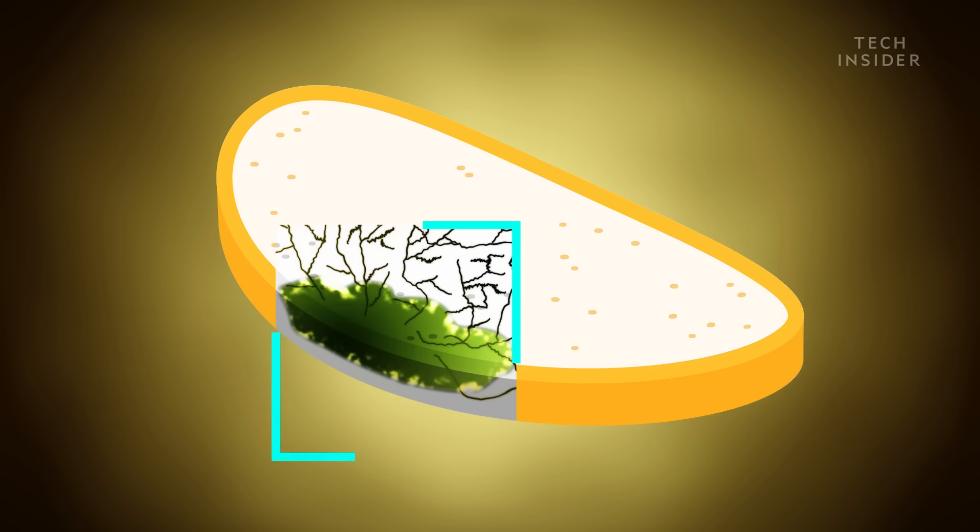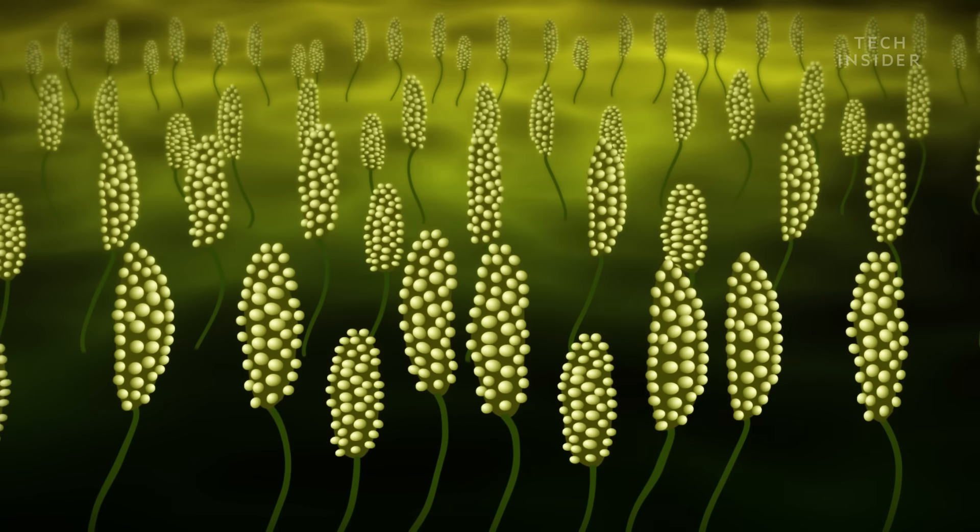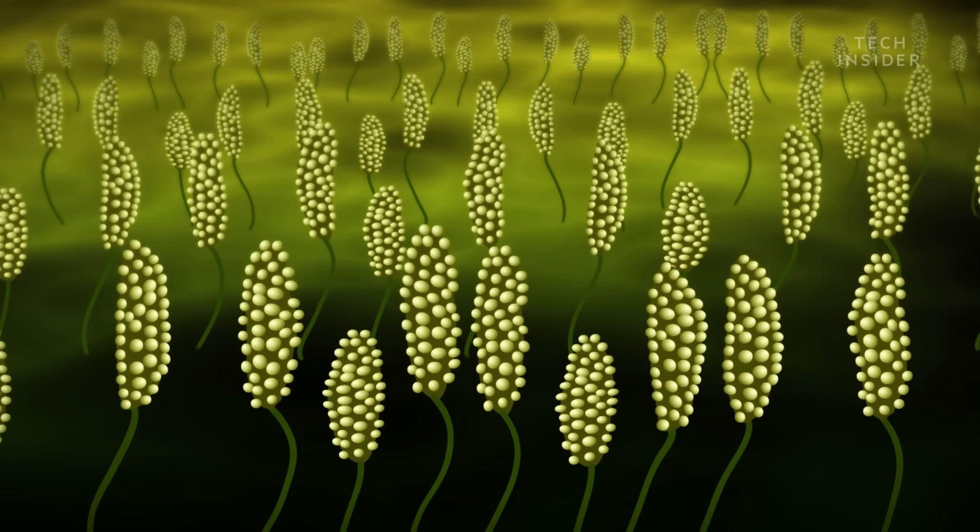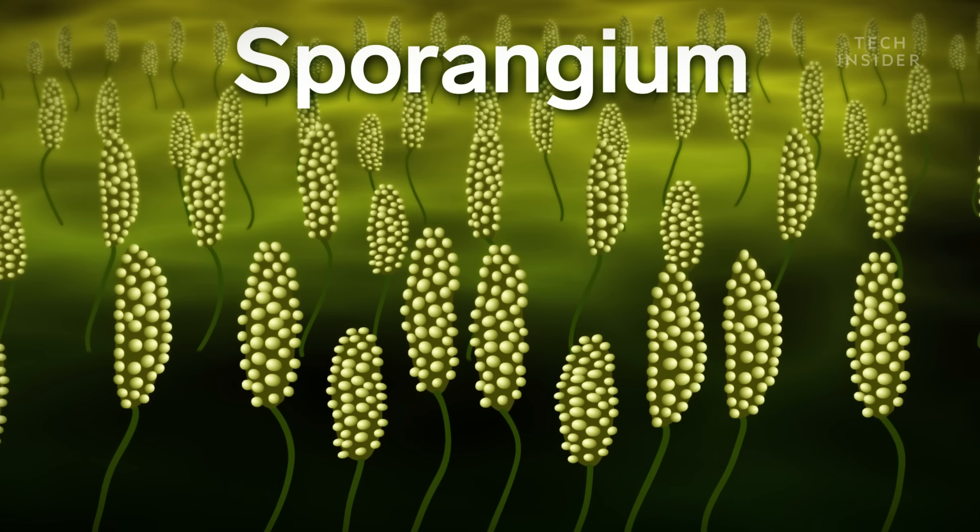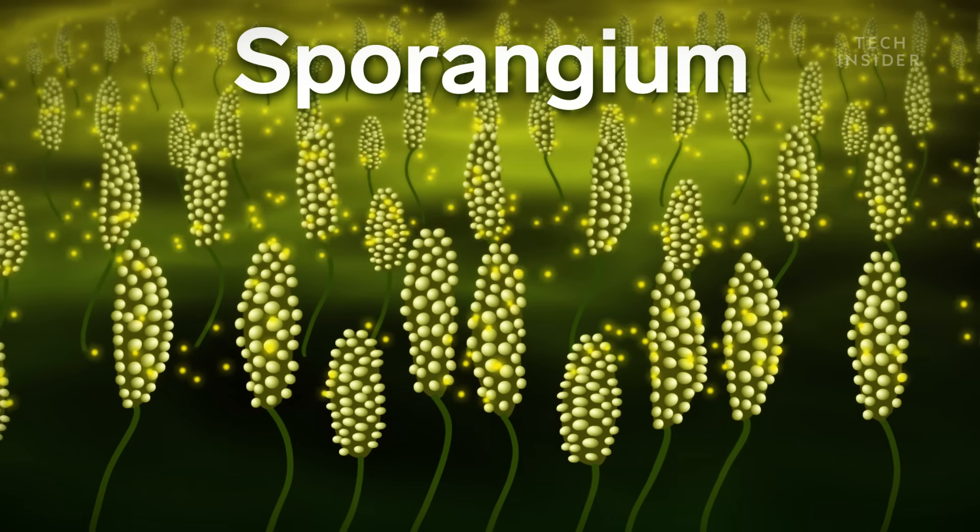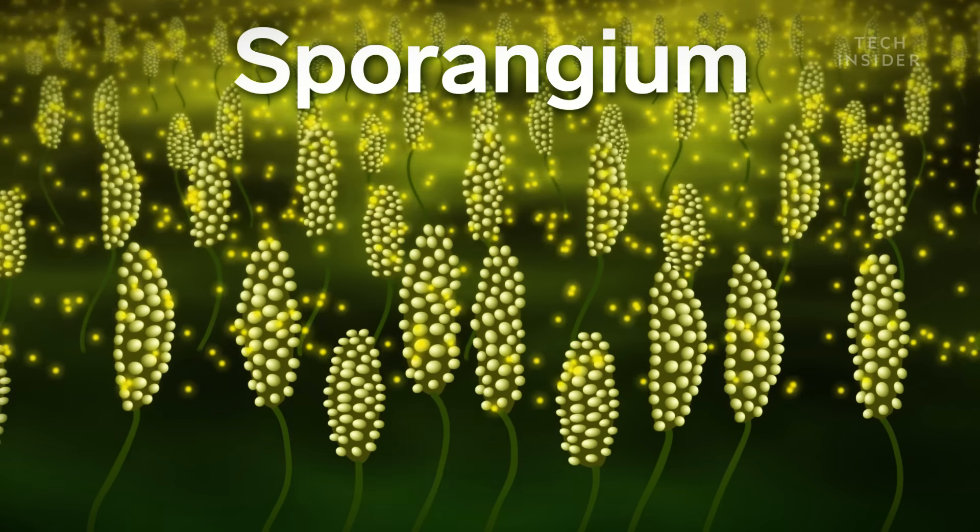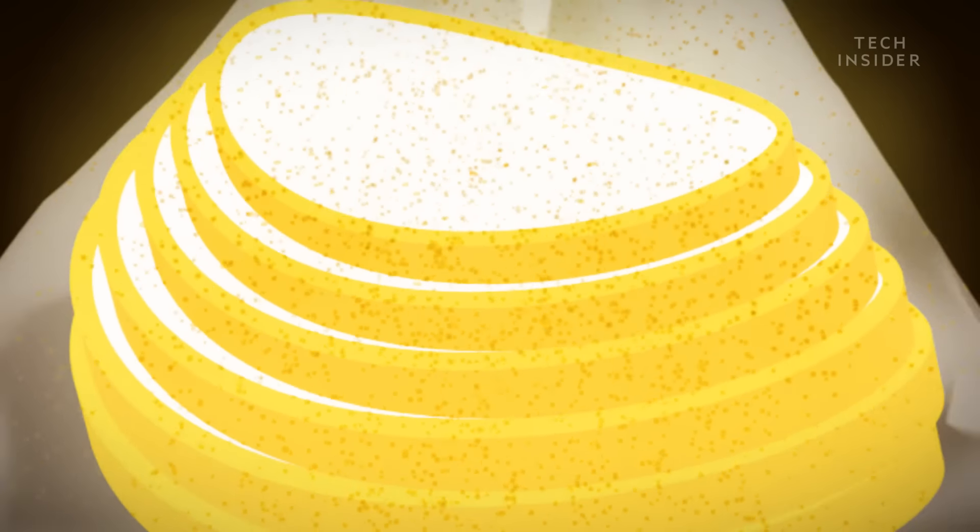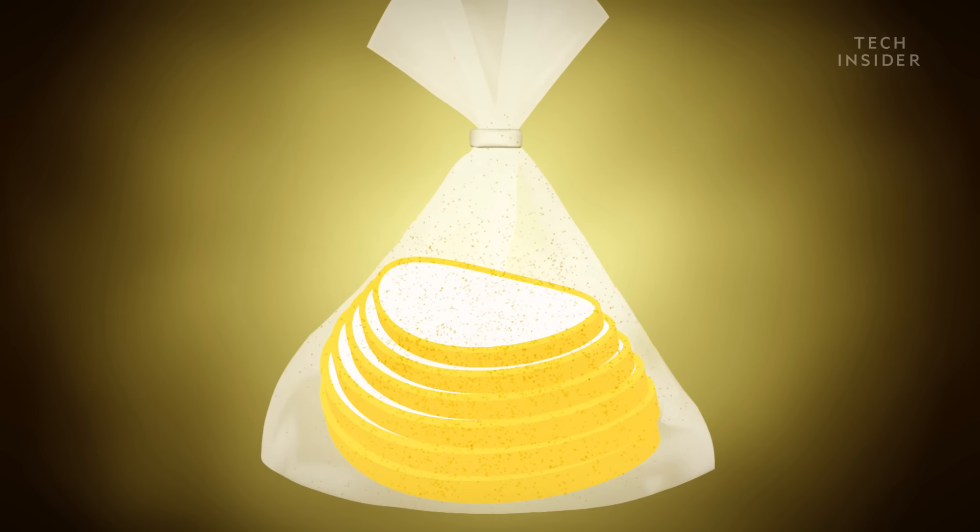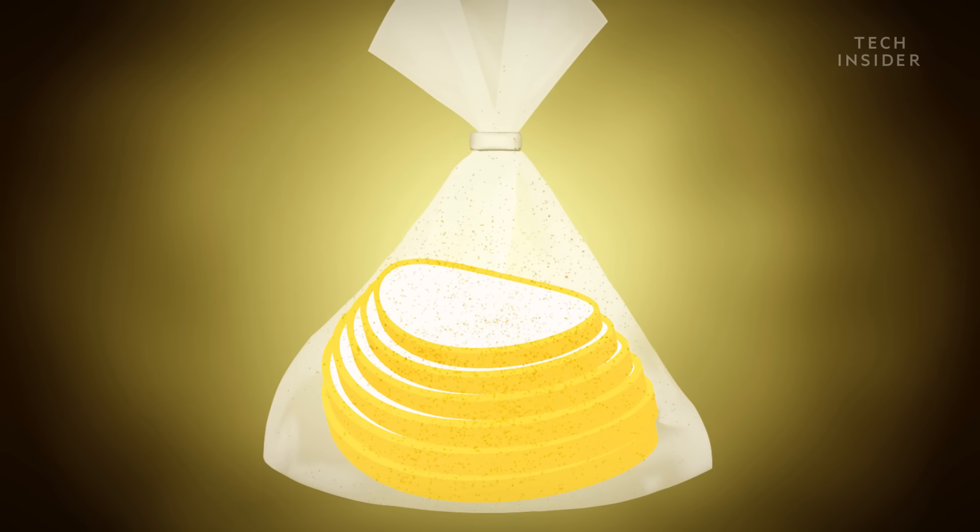Because by the time the mold sprouts its fuzzy head, what you're really seeing is the reproductive part of the mold called sporangiums. Each sporangium releases tens of thousands of spores. So even though you can't see it, that entire loaf could be teeming with fungus.